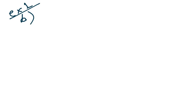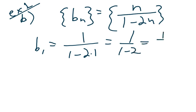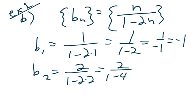Okay, how about another sequence? This is example B, and our book calls this B sub n. Our definition of this sequence is B sub n is n over 1 minus 2n. So this means B sub 1 is 1 over 1 minus 2 times 1. So that's 1 over 1 minus 2 is 1 over negative 1 is negative 1. B sub 2 is 2 over 1 minus 2 times 2, which is 2 over 1 minus 4, which is negative 2 thirds.